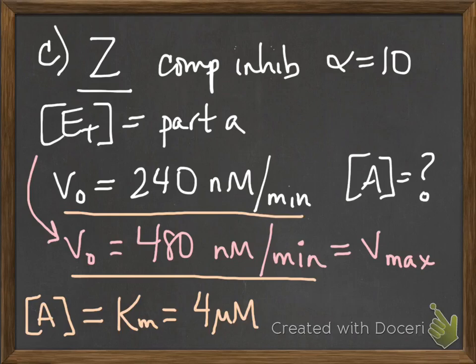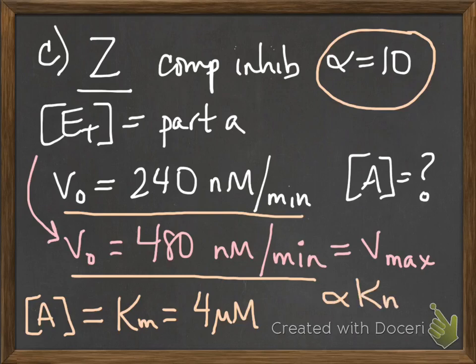But you're not done yet because you have a competitive inhibitor in the situation. Remember, your KM apparent in the presence of a competitive inhibitor is alpha KM and in this case would be 10 times 4 micromolar which equals 40 micromolar for your final answer.